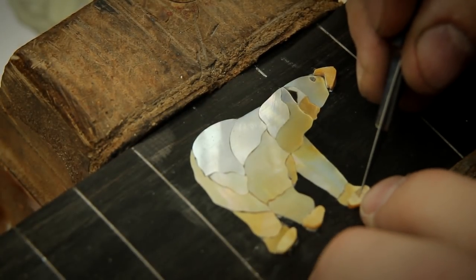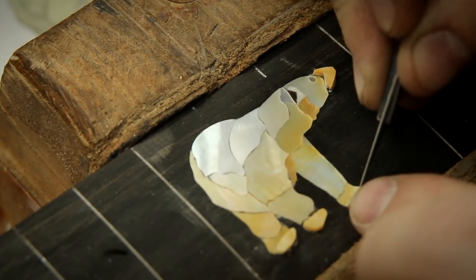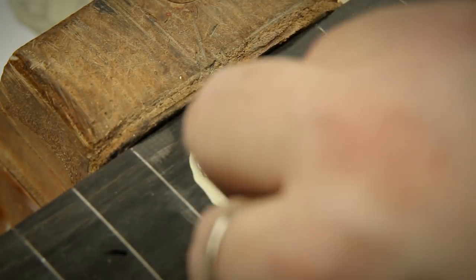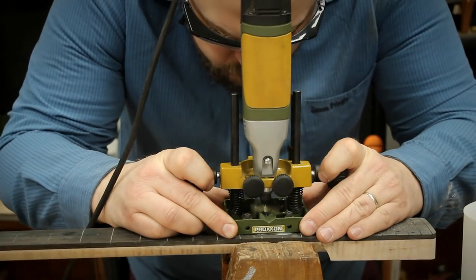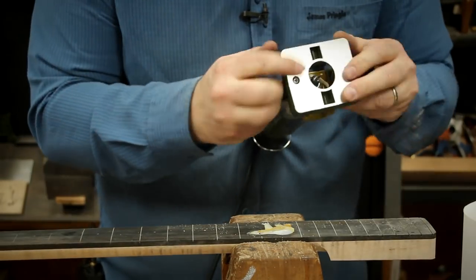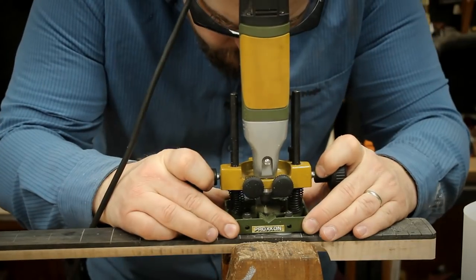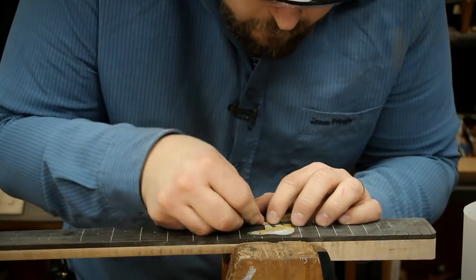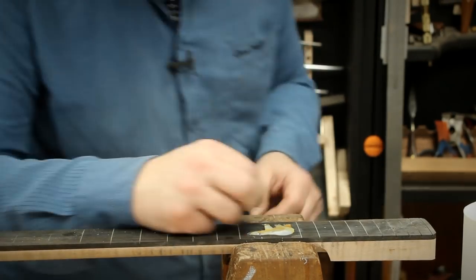So you start off in exactly the same way. Take your piece of inlay, mark around it. So I'm using a 2mm cutter now. Just need to set the depth correctly. As long as the new inlay matches the old inlay, I can just copy that. That's pretty good. So, rinse and repeat. Here we go.